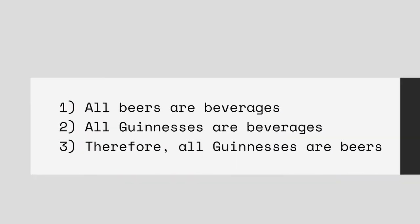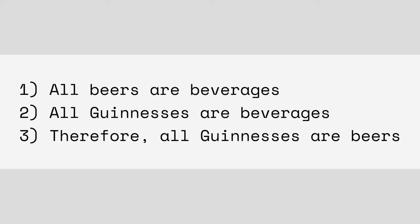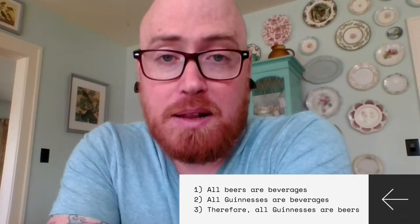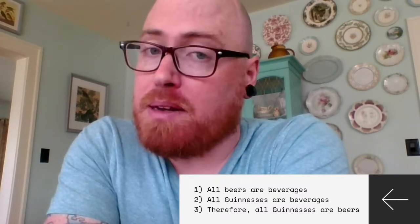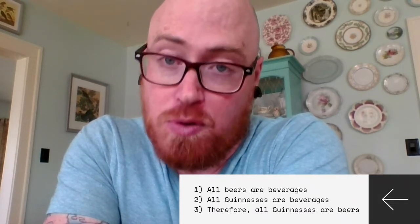Take this argument: All beers are beverages. All Guinnesses are beverages. Therefore, all Guinnesses are beers. Guinness is a nitrogen-infused Irish stout. All beers are beverages — true. All Guinnesses are beverages — true. All Guinnesses are beers — true. So we have true premises and a true conclusion. You might think it's valid because the premises and conclusion are actually true, but that would be a mistake.